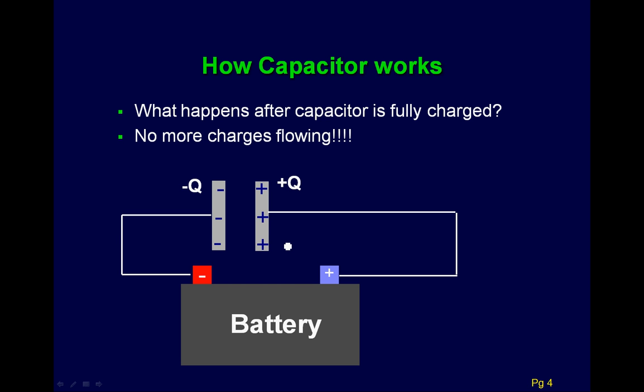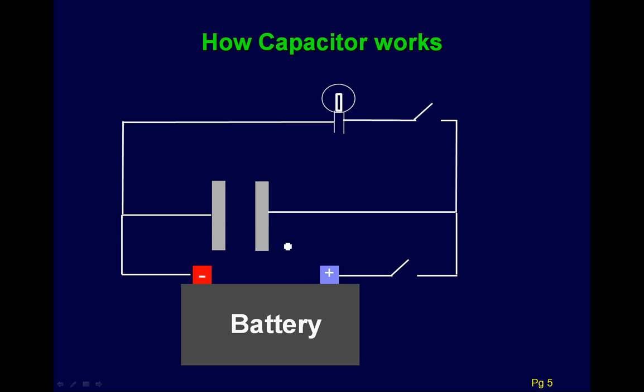Current is basically the charges flowing through the circuit, so that doesn't happen anymore — we'll talk more about current later. The capacitor is charged up and ready to do whatever you want it to do; that charge is ready to be used.